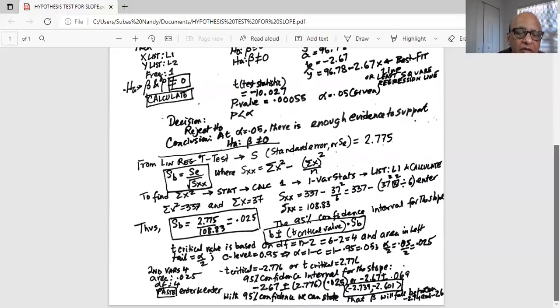So I plug those information. So my B, that is the sample slope is minus 2.67 plus minus T critical is 2.776 times the formula is times SB, which is 0.025. Remember B plus minus T critical value multiplied by SB. So if I do the calculations correctly, it is minus 2.67 plus minus 0.0069.